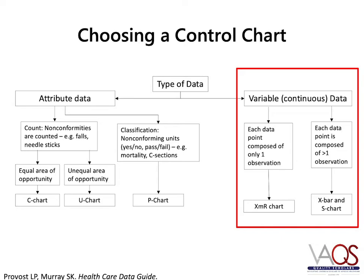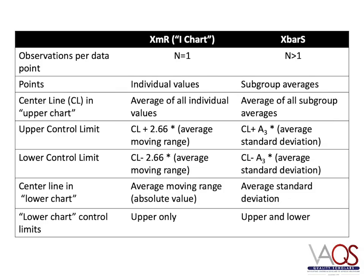Alternatively, you could aggregate the data by day and have each data point be the average of the wait times for that day. In this case, there is more than one observation per data point and the appropriate chart to use would be the X bar and S chart. This table provides a comparison of the XMR and the X bar and S charts.